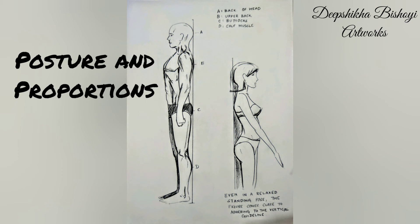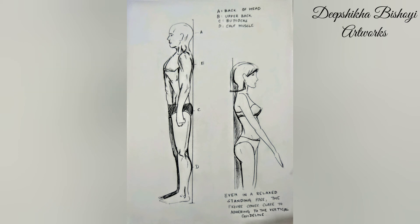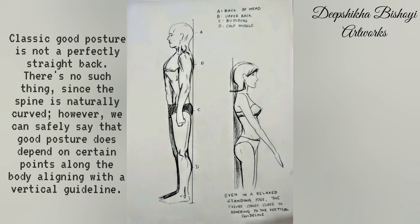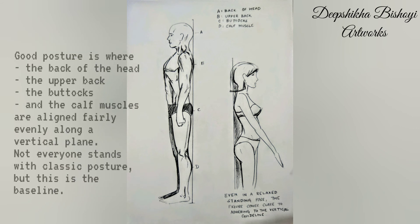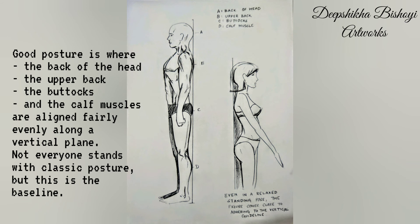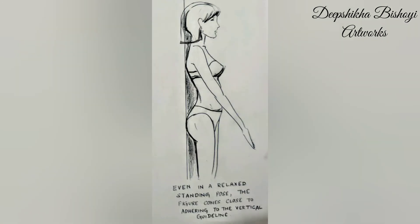Posture and proportions: the definition of proportion is the relative sizes of objects or areas and the relationships between them. For the spine, we use a vertical guideline as the basis from which to make our observations. Classic good posture is not a perfectly straight back — there is no such thing, since the spine is naturally curved. However, good posture does depend on certain points along the body aligning with a vertical guideline. Good posture is where the back of the head, the upper back, the buttocks, and the calf muscle are aligned fairly evenly along a vertical plane. Even in a relaxed standing pose, the figure comes close to adhering to the vertical guideline.